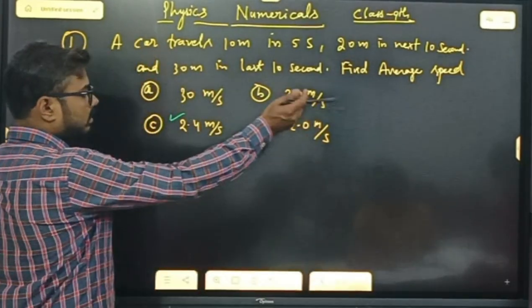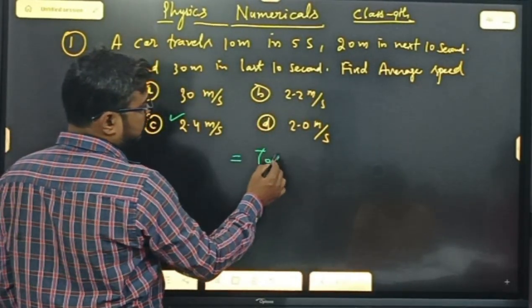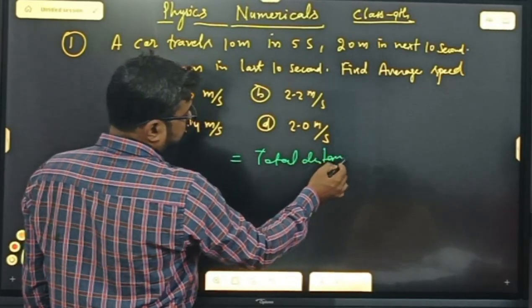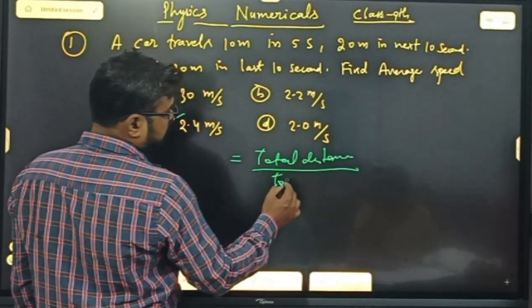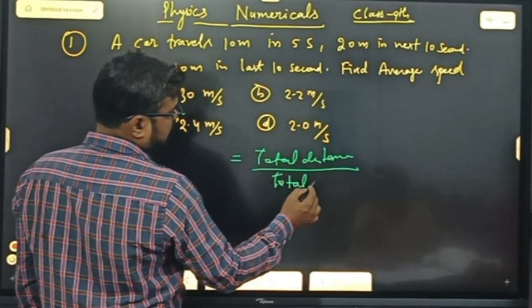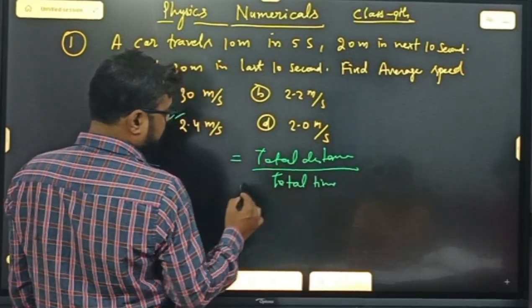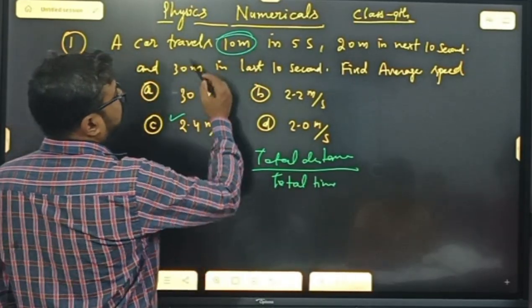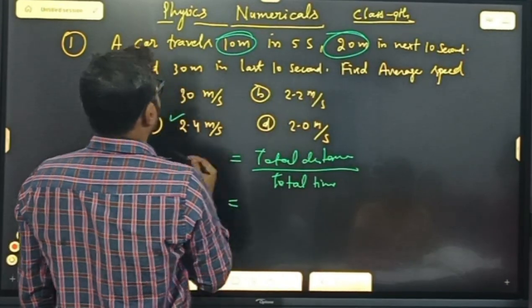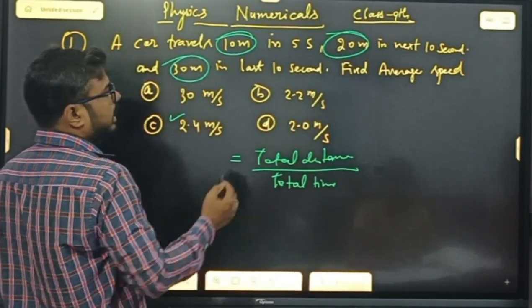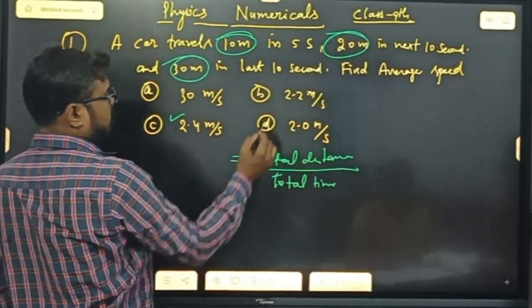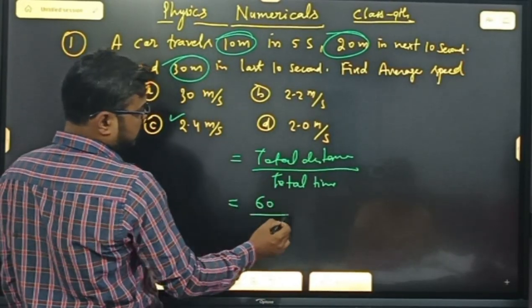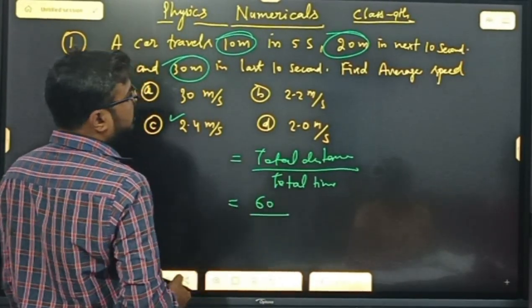Average speed = total distance upon total time. तो distance कितना है? 10 meter, 20 meter, 30 meter — add करो: 20 + 30 = 50, plus 10 = 60. अपना total time?